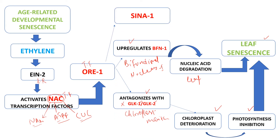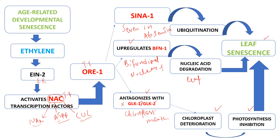In the third pathway, SENA genes are involved. SENA stands for Seven in Absentia. SENA1 is involved in ubiquitination — specifically it encodes a ubiquitin ligase protein. Ubiquitination of leaf components is involved in leaf senescence. So to summarize, ORE1 drives leaf senescence through three pathways: first, antagonization of GLK1 and GLK2; second, upregulation of BFN1; and third, activation of SENA1.